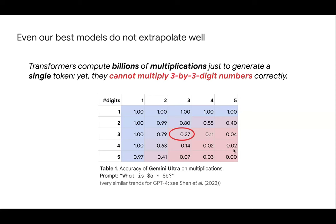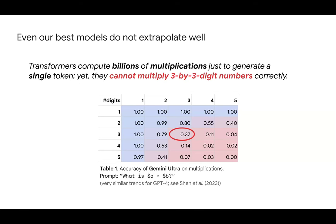Modern transformers have hundreds of billions of parameters and perform at least that many multiplications just to generate a single output token. Yet they cannot reliably multiply three-by-three-digit numbers correctly. This is shown in a simple accuracy table for Gemini Ultra, one of Google DeepMind's frontier models. This isn't unique to Gemini — published studies for GPT-4 show the same thing. Virtually all frontier models in their base form struggle with this, so you cannot claim they truly understand multiplication.